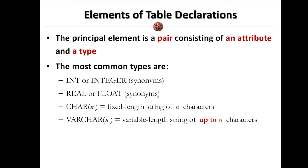The common types we can use to declare the attributes include integer. We write it down as either int or integer. Depending on the system we are using, they can be the same. And for real numbers, we can either write them down as real or float in our system.